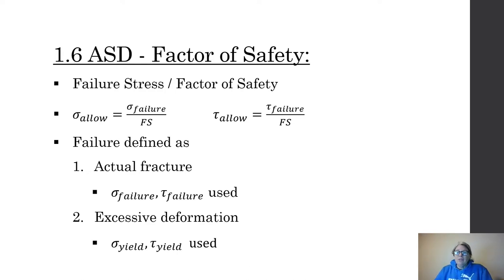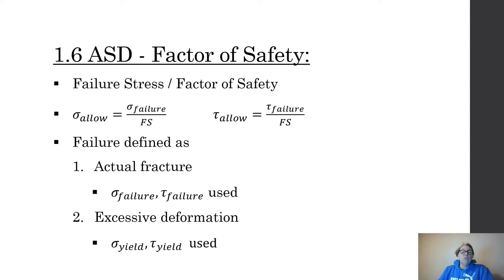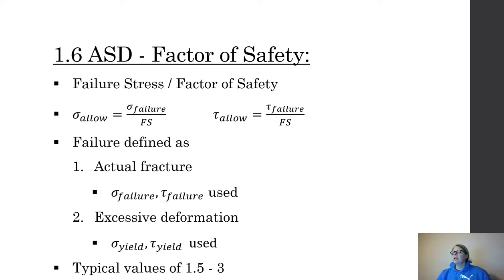If I'm reducing the failure stress — the fracture stress — I'm designing so the system literally won't break. If I want to limit deformations and stay in the elastic region, I use the yield stress instead, which is a much lower value than the fracture stress. It depends on what kind of design I'm pursuing. Typical factor of safety values are 1.5 to 3.